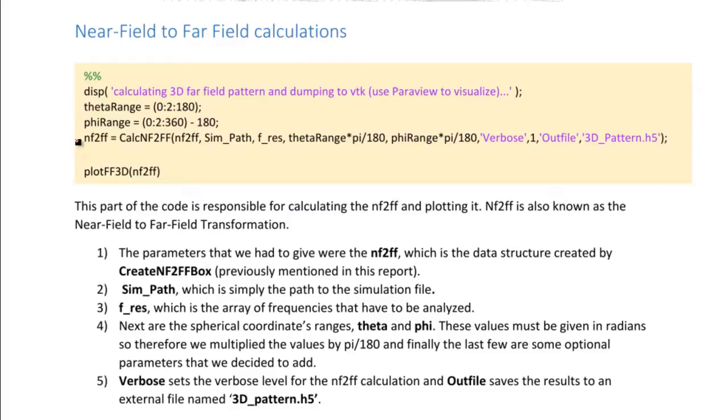In the actual NF2FF calculations, we have to input certain parameters. One of them being the NF2FF, which is the near field to far field calculation. The sympath, where the file was made. F_res, which is simply the array of frequencies that have to be analyzed. And then, the previously mentioned theta range, which is multiplied by pi divided by 180 to get into radians, and phi range, which is also multiplied by pi divided by 180 to get into radians. Last part is the verbose, which sets the verbose level for the NF2FF calculation, and the outfile, which saves the results to an external file named 3Dpattern.h5.